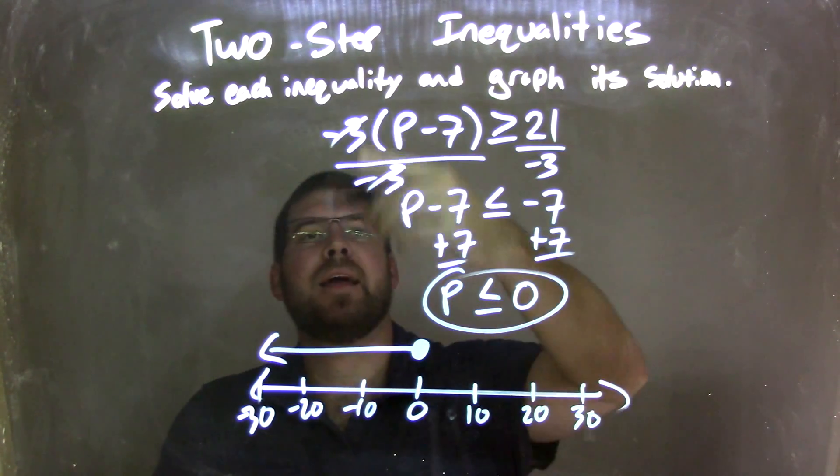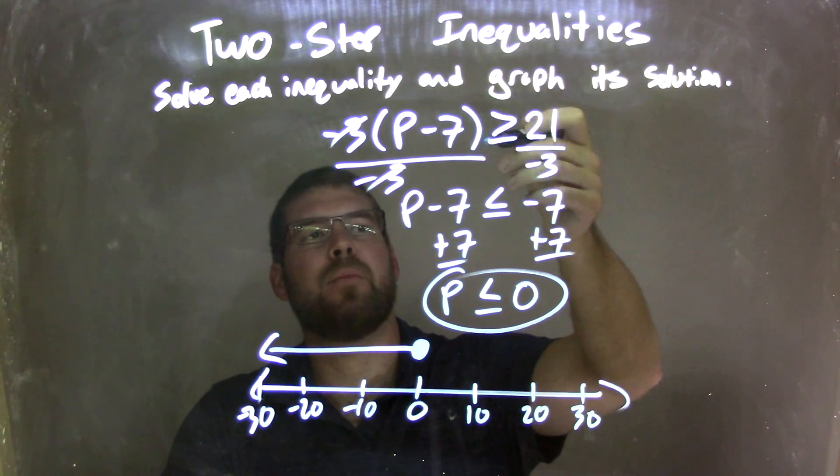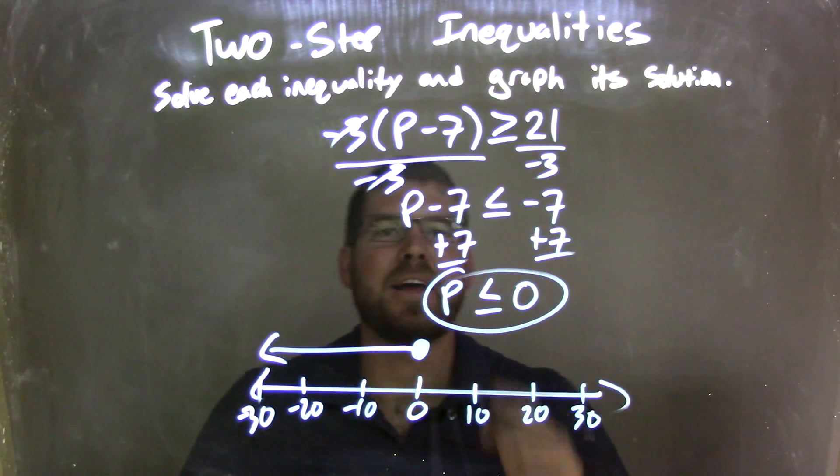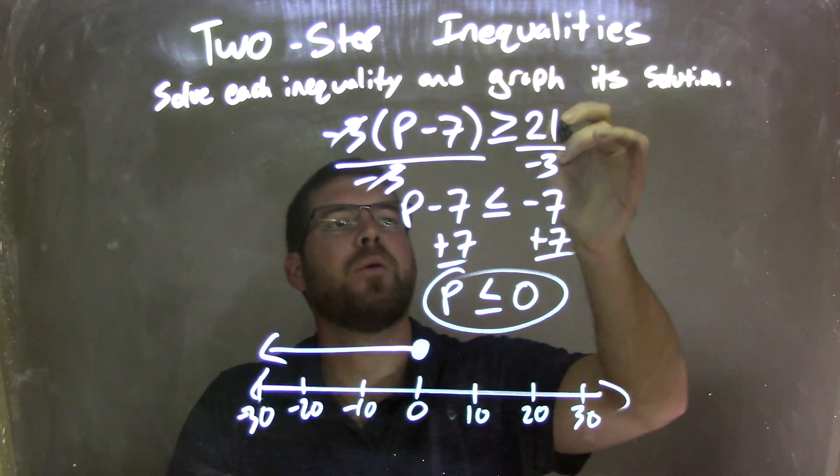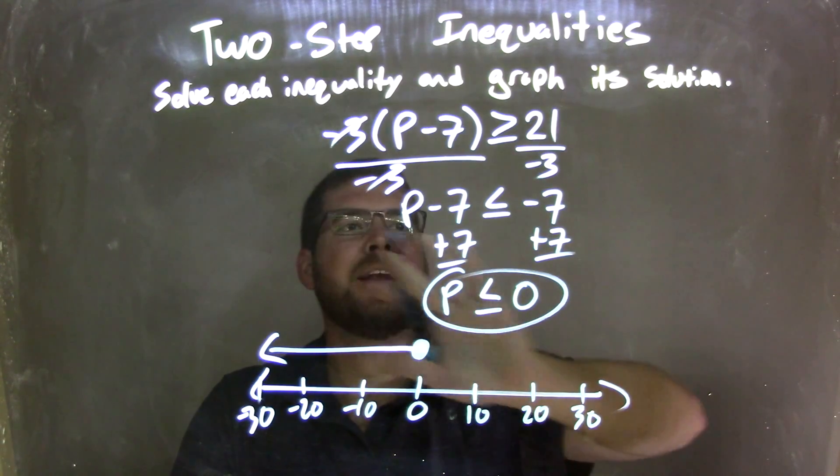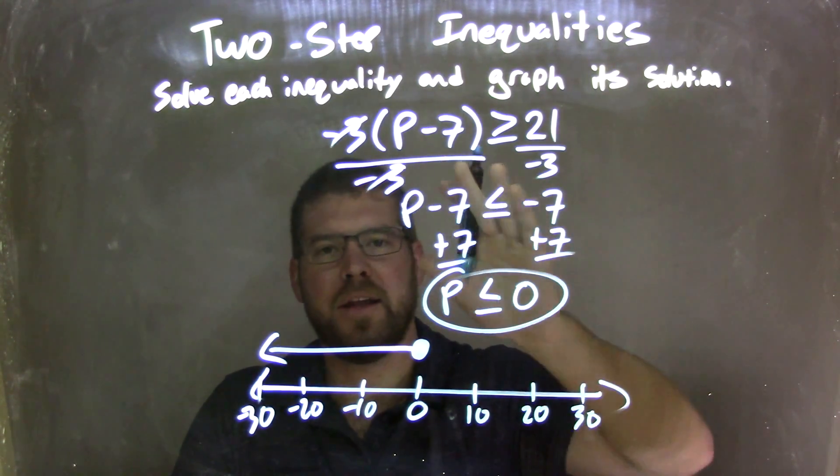So let's recap. We have negative 3 times parentheses P minus 7, in parentheses, and that's greater than or equal to 21. I divided by negative 3 to both sides, giving me a P minus 7 on the left, and 21 divided by negative 3 to be negative 7 on the right. Because I'm dividing by a negative over an inequality, the inequality needs to flip.